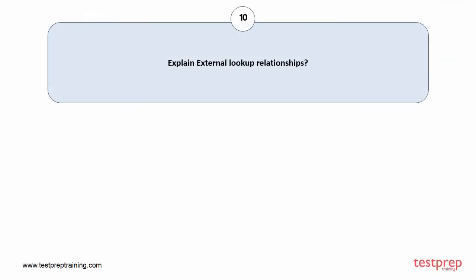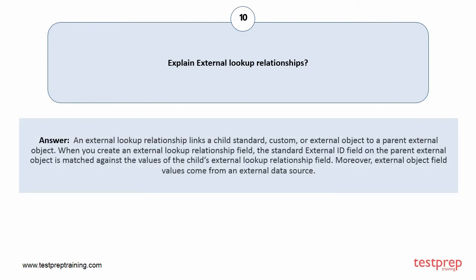Question number ten: explain external look-up relationships. An external look-up relationship links a child standard, custom, or external object to a parent external object. When you create an external look-up relationship field, the standard external ID field on the parent external object is matched against the values of the child's external look-up relationship field. Moreover, external object field values come from an external data source.